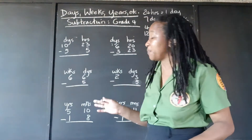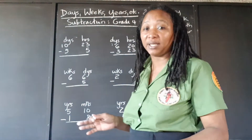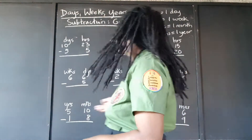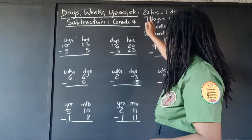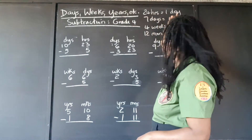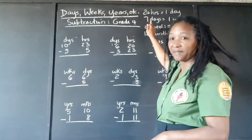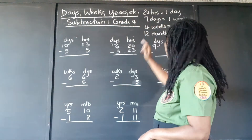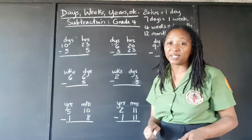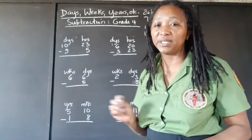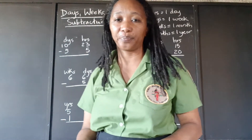So we need to make sure we understand the conversion of the units. There are 24 hours in one day, 7 days in one week, 4 weeks in one month, and 12 months in one year.